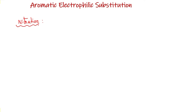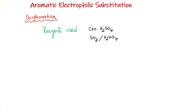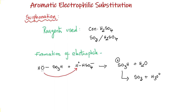In the case of nitration, the reagent used is called a nitrating mixture, which is a mixture of concentrated nitric acid and concentrated sulfuric acid. The OH group of nitric acid gets protonated by sulfuric acid, forming an intermediate from which, when water is eliminated, you get NO2+ — the nitronium ion — as the electrophile. For sulfonation, we use concentrated sulfuric acid or a mixture of sulfur trioxide and sulfuric acid, called fuming sulfuric acid or oleum. When one sulfuric acid molecule is protonated by another, you get SO3H+ as an electrophile, which releases H+ to give SO3. Either SO3H+ or SO3 can be considered the electrophile in sulfonation. An important point: sulfonation is a reversible reaction when heated with dilute sulfuric acid.